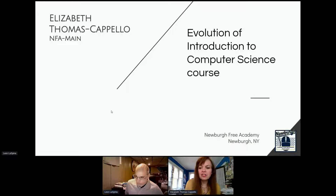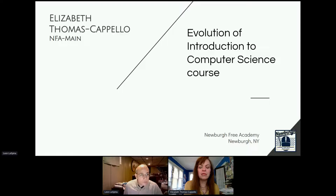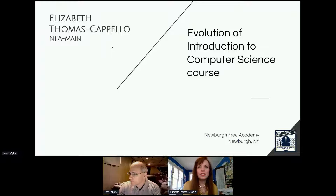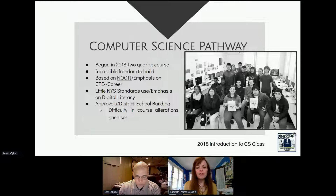Here we are at part two. My name is Elizabeth Thomas Capello. I teach at Newburgh Free Academy, main campus, and I teach the computer science pathway for the district. Our school is located right in the heart of Newburgh, New York. We are about 48% Hispanic, about 25% Black, and about 25% white — a very diverse population. A typical graduating class is around 700.